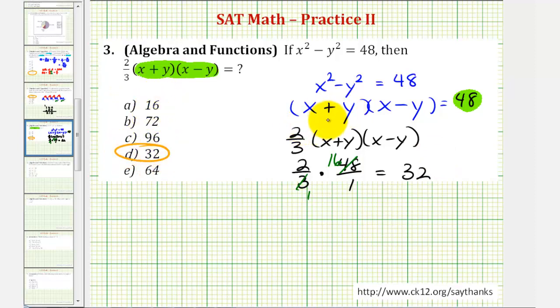But let's also discuss another way to solve this problem. If we don't remember how to factor, we could find the product of these two binomials, and then perform a substitution using the given equation. So as an alternative, we could start with 2/3 times the quantity x plus y, times the quantity x minus y.